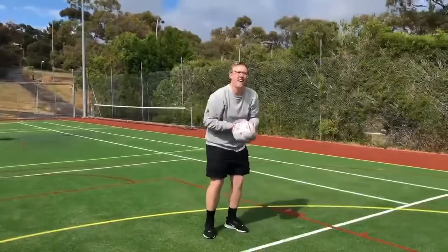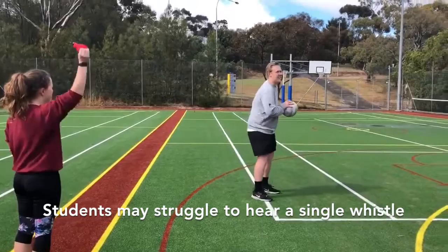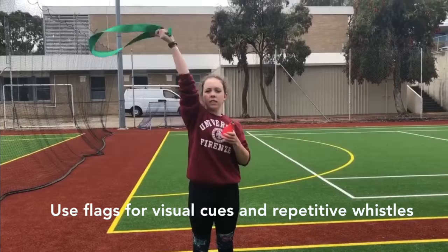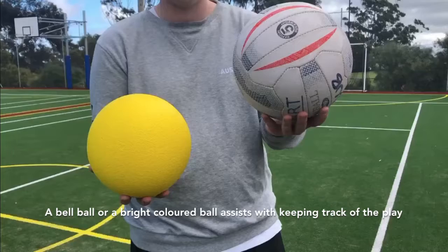Adapting equipment used by students and teachers in netball provides an equal playing field amongst all participants. Students may struggle to hear a single whistle, so use flags for visual cues and repetitive whistles. A bell ball or bright coloured ball assists with keeping track of the play.